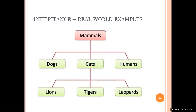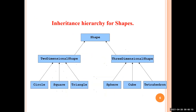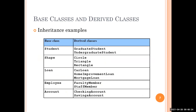We can have a class like 'mammals' — mammals can be cats, dogs, and humans; within cats we can have lion, tiger, or leopard. From geometric shapes: a shape can be 2D or 3D; 2D shapes include circle, square, triangle; 3D shapes include cube, sphere, or tetrahedron. In banking: a loan can be personal, car, home, or mortgage loan; an account can be a saving account or checking account — one gives profit, the other doesn't.